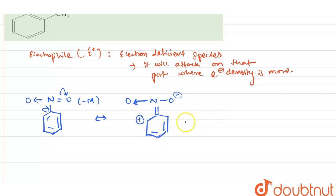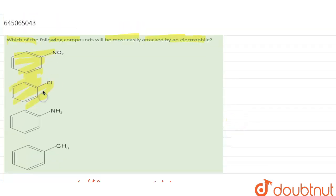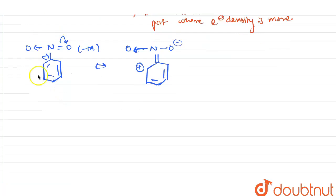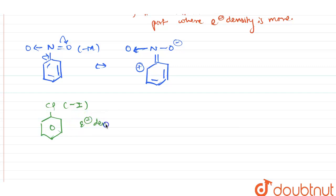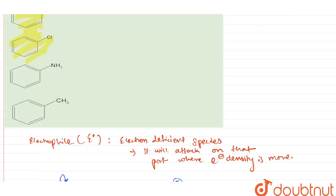Next we have chlorobenzene. Chlorobenzene shows minus I effect, meaning chlorine is an electronegative atom and it is an electron-withdrawing group, so electron density in the ring decreases. However, chlorine is a much weaker electron-withdrawing group compared to the nitro group, so chlorobenzene will be placed before nitrobenzene in the order.